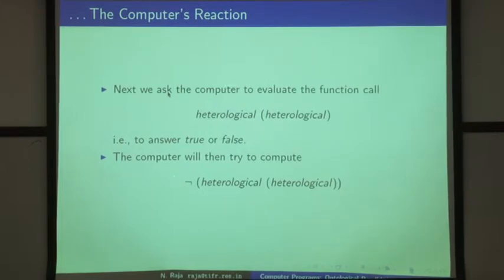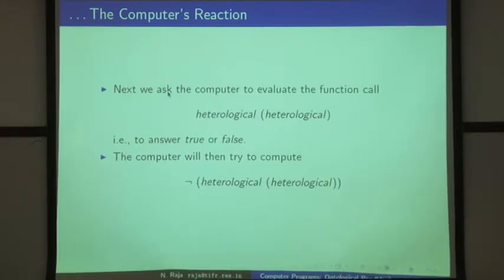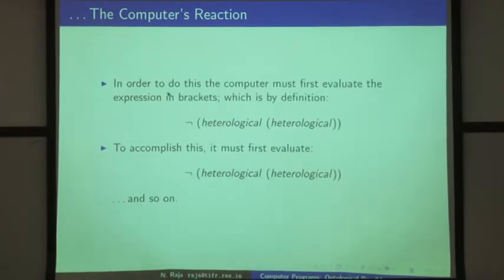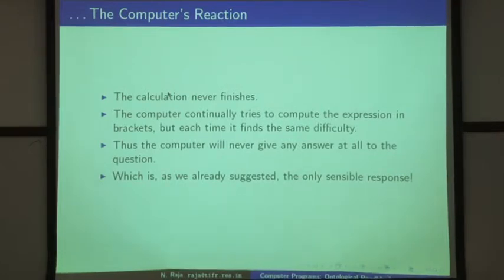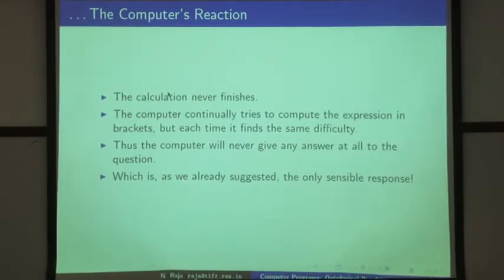Now we come back to the question: is heterological autological or heterological? We ask the computer to evaluate this. The computer just substitutes heterological for P — it will try to evaluate heterological applied to heterological and then negate the answer. In order to compute this, it doesn't know how to do this, so it goes back to the definition of heterological — the same program. And then it tries to apply that. And then once again to do that, it has to evaluate this, and it will keep going on like this. The computation never finishes — the computer will not give you any answer. It just keeps going on and on.